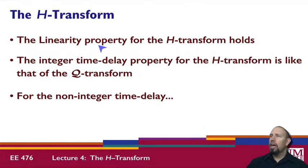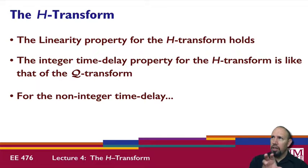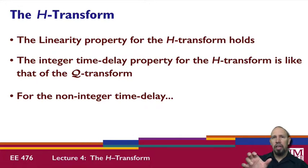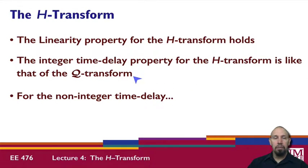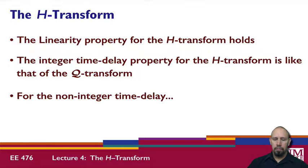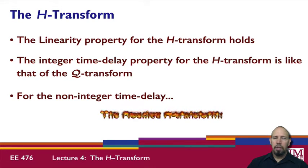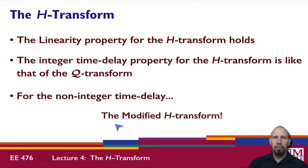The H-transform has the property of linearity: if we have a sum of transfer functions, we can take the H-transform of each term separately. This means for a complex function, we can break it into smaller pieces, work with the individual pieces, and combine at the end. The integer time delay property for the H-transform follows the same as for the Q transform. For non-integer time delay, we use what's called the modified H-transform, just as we have the modified Q transform for signals with time delay.